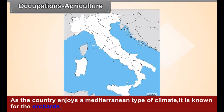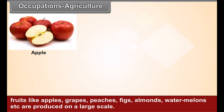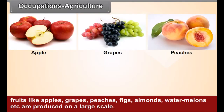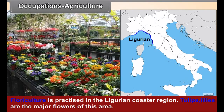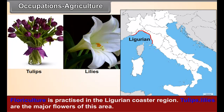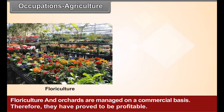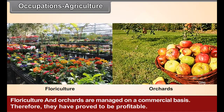As the country enjoys a Mediterranean type of climate, it is known for orchards. Fruits like apples, grapes, peaches, figs, almonds, and watermelons are produced on a large scale. Floriculture is practiced in the Ligurian coastal region; tulips and lilies are the major flowers of this area. Floriculture and orchards are managed on a commercial basis and have proved to be profitable.